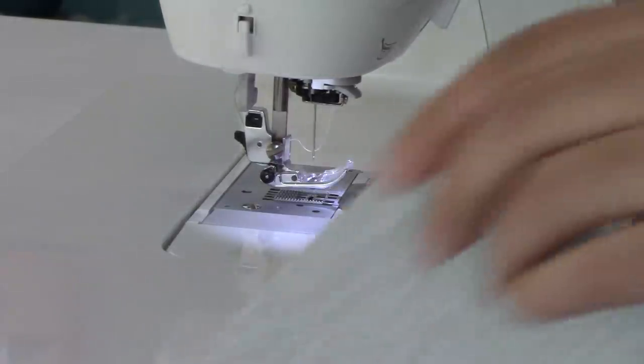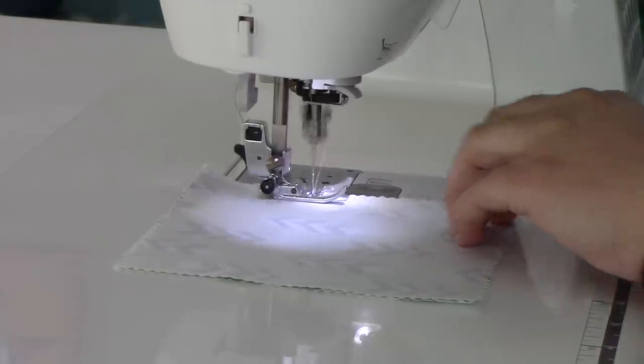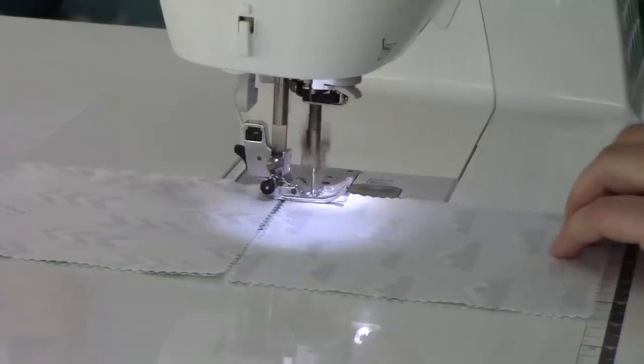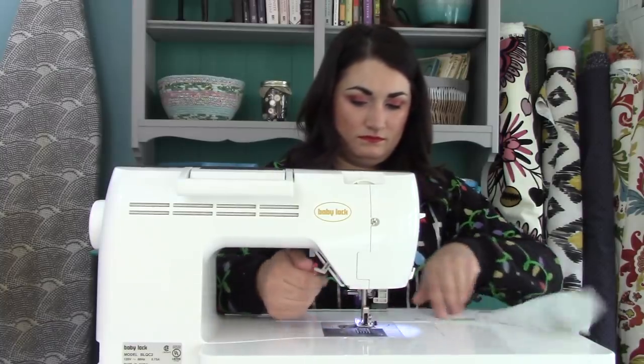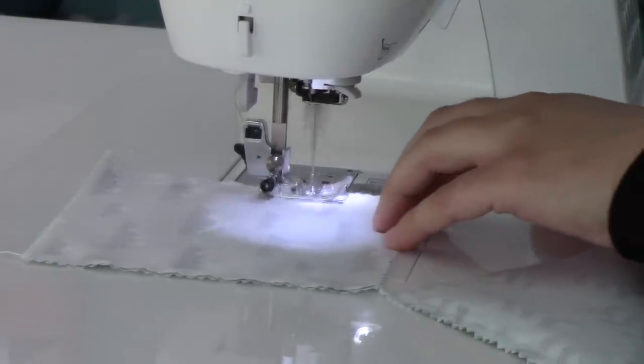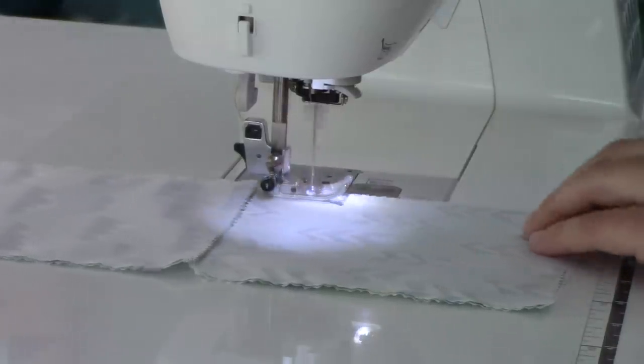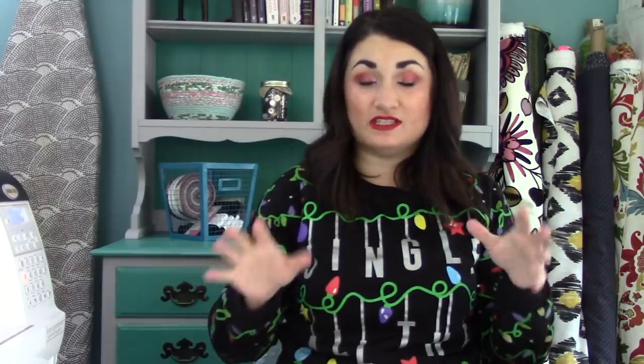I'm going to repeat that with the other pairs that I pulled out. And you can chain piece these to make it go faster. So now I've got seams going down both sides of this. So what I'm going to do is I'm going to cut up the center and that will start to create a four patch.